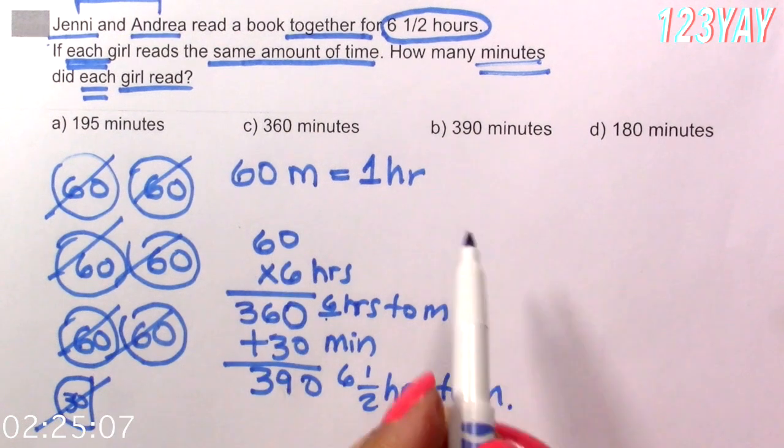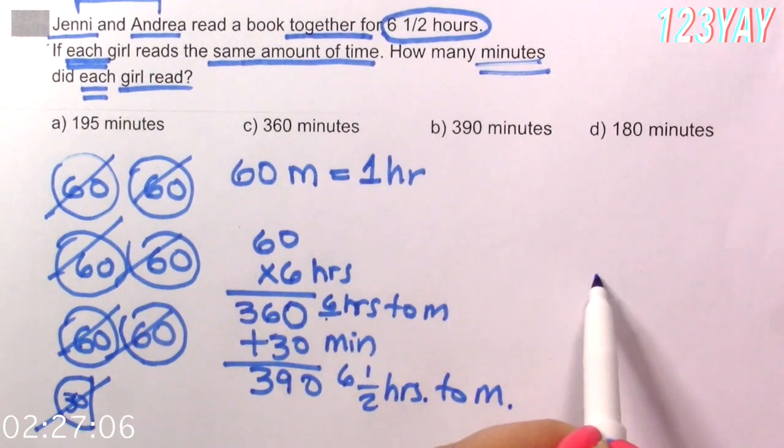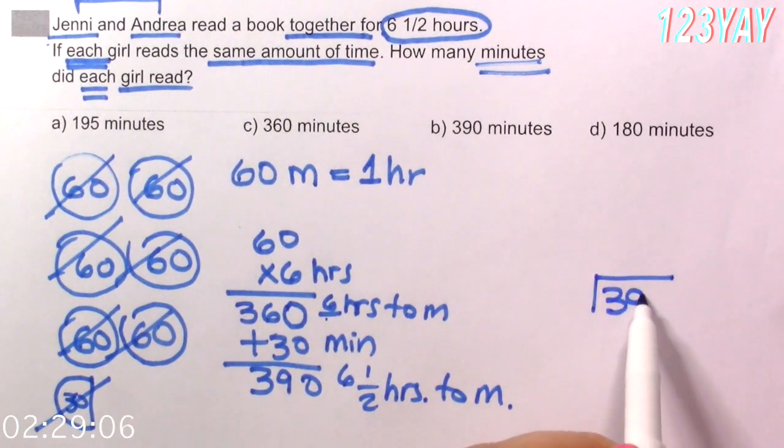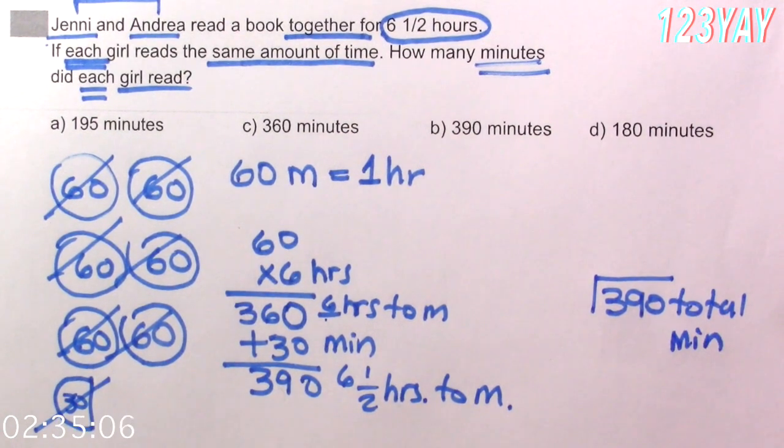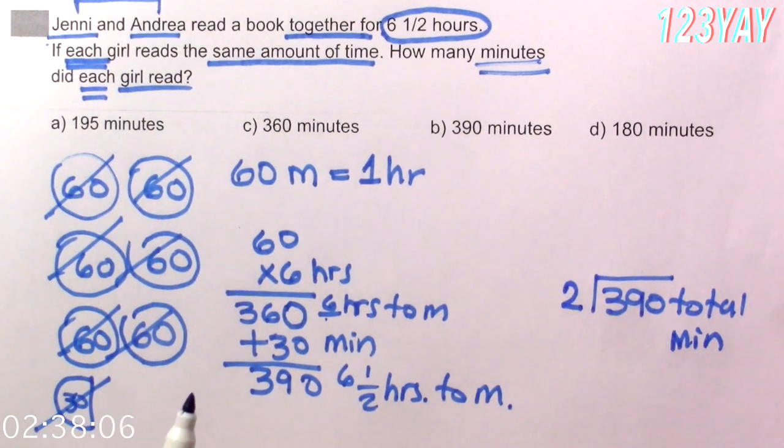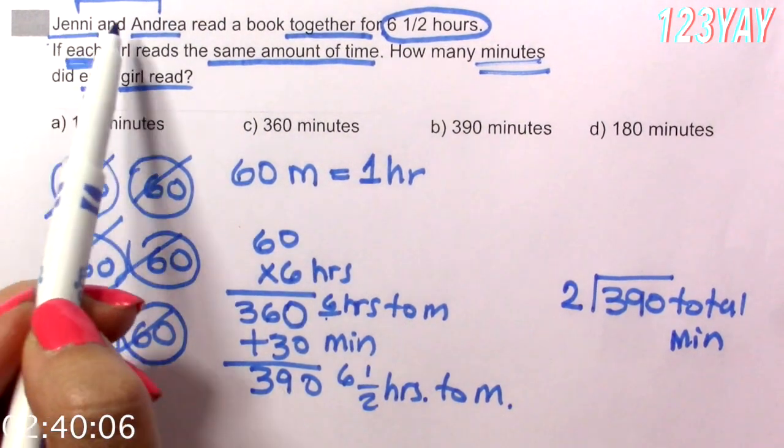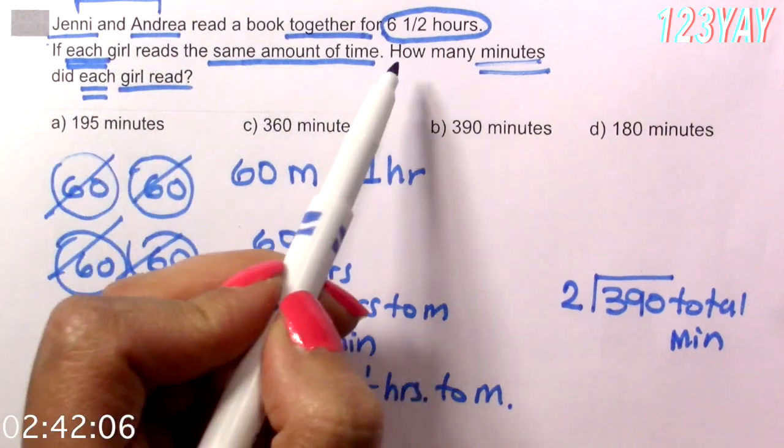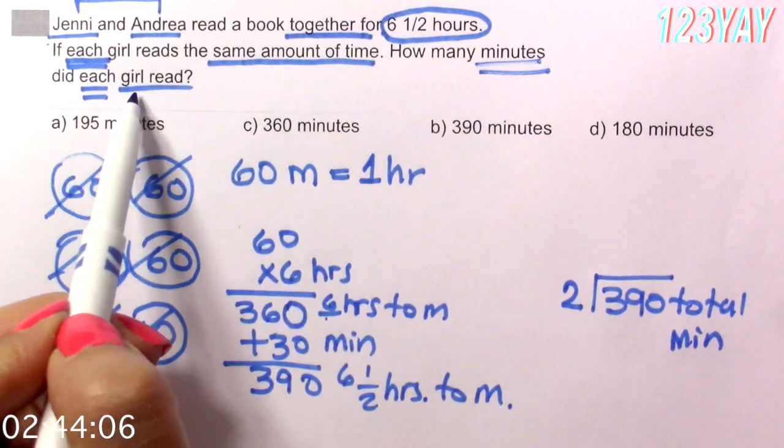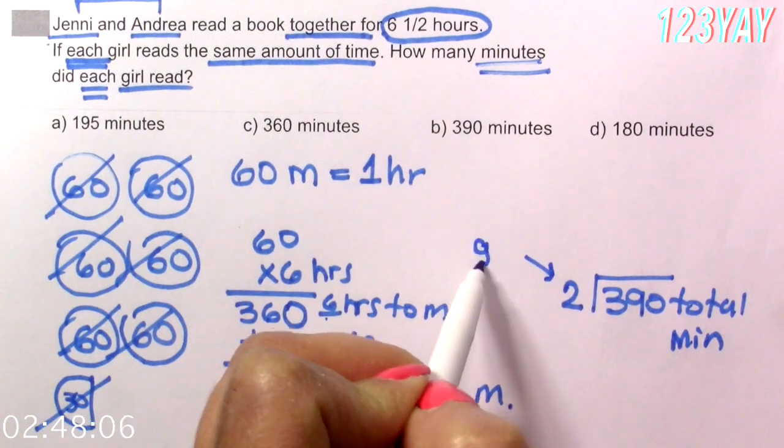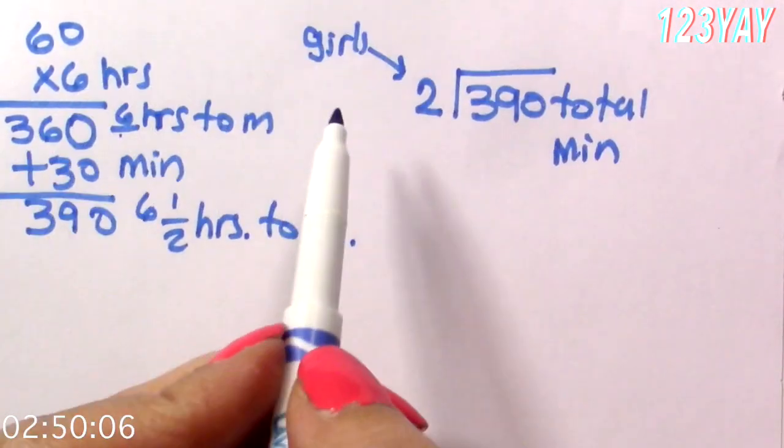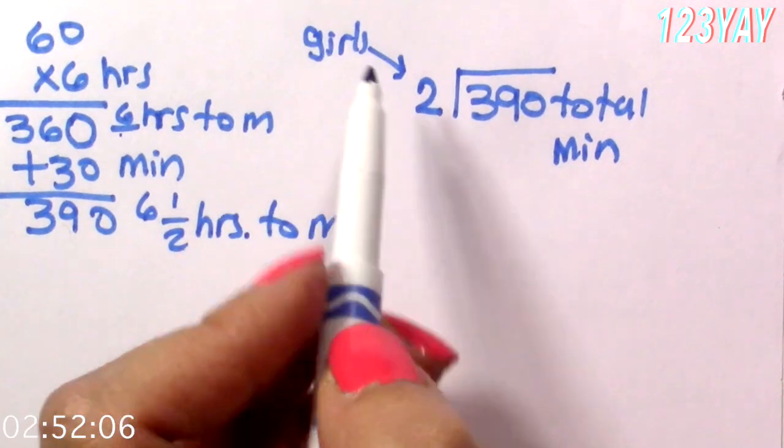Now we have to divide the total of minutes, 390 total minutes. Divide by what? By two. Why by two? Because there are two girls and we want to know how many minutes each girl read. So divide by two girls. I move the paper a little bit to have more space. Let's divide.